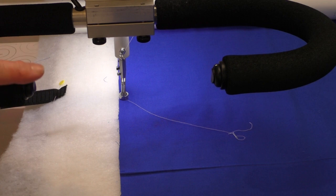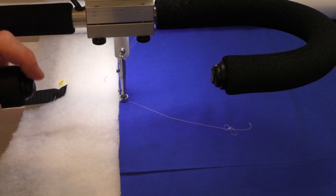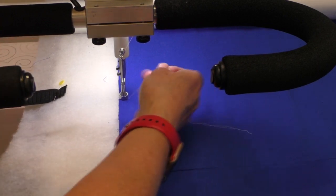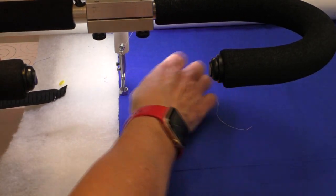I'm going to use one of those needle up and down buttons to take a single stitch and bring my bobbin thread up to the surface of the quilt. There we go.